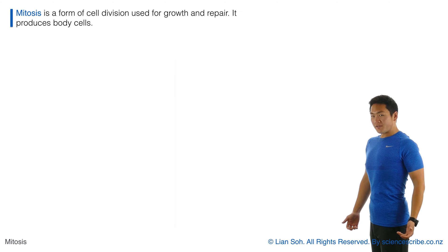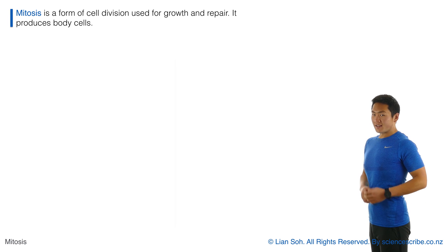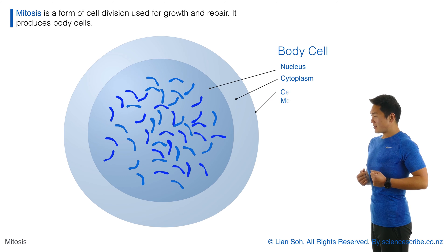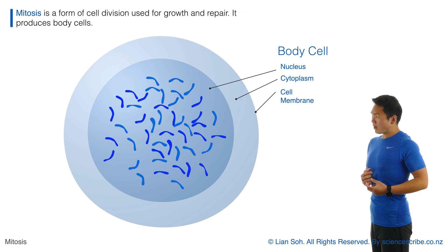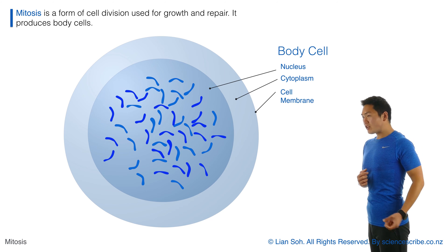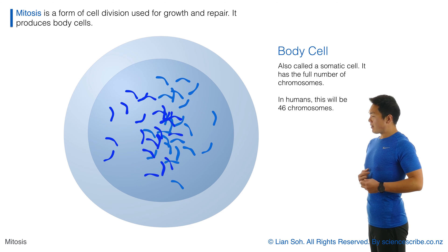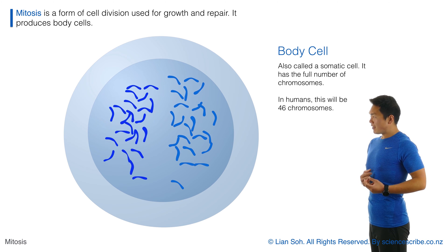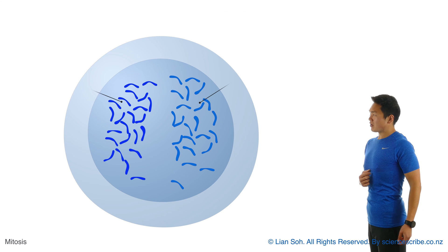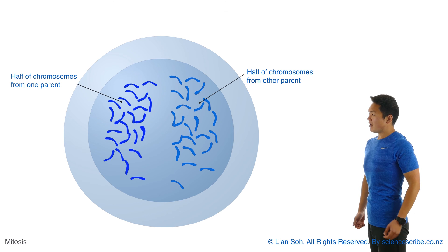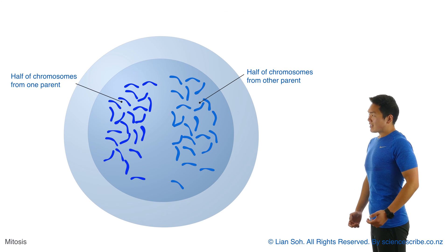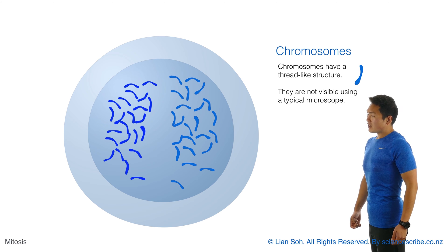Mitosis is a form of cell division that's used for growth and repair, and it does this by producing more body cells. Here's a diagram of a body cell, and in this body cell it should have the full number of chromosomes. Half of these chromosomes come from the mother and the other half come from the father.